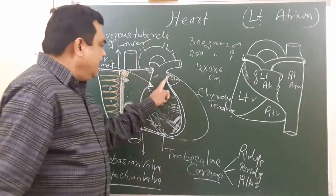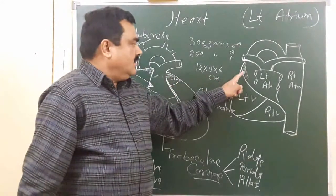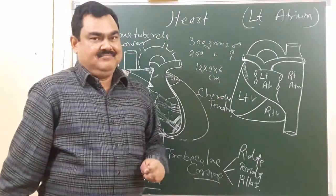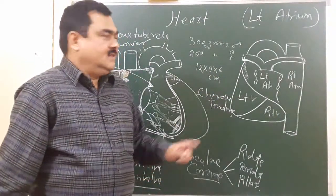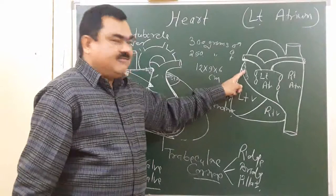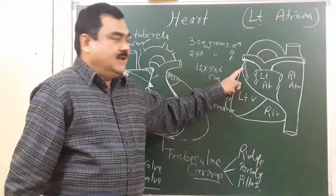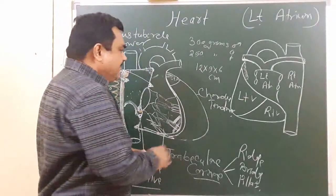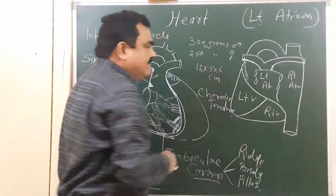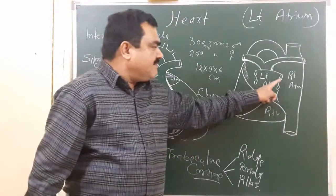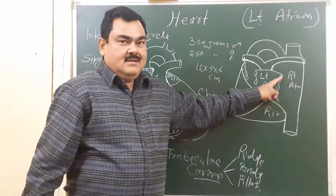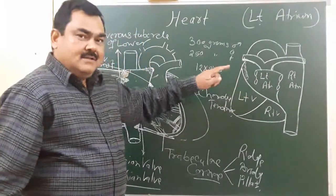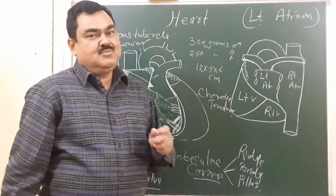This left auricle develops from the primitive atrium. That's why it is rough and has musculi pectinati. The rest of the left atrium develops from absorption of the pulmonary vein during embryonic life. That's why a large area of the left atrium is smooth.